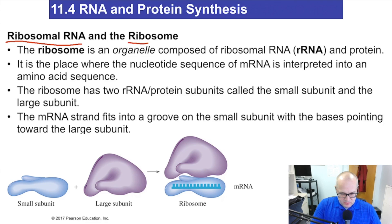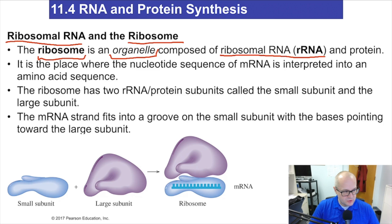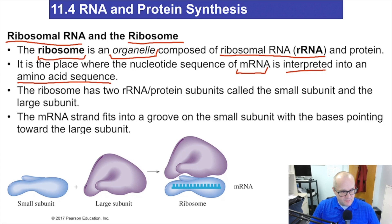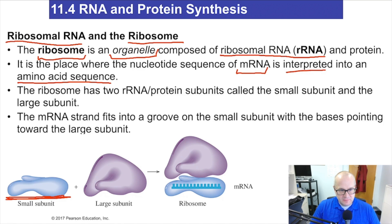Now, ribosomal RNA and the ribosome — now we're getting into cell biology. The ribosome is an organelle composed of ribosomal RNA and protein. It is the place where the nucleotide sequence of mRNA is interpreted into an amino acid sequence — this is where building of the protein begins. The messenger RNA will leave the nucleus and attach to the small subunit of a ribosome, and then the large subunit will interact with the small subunit.